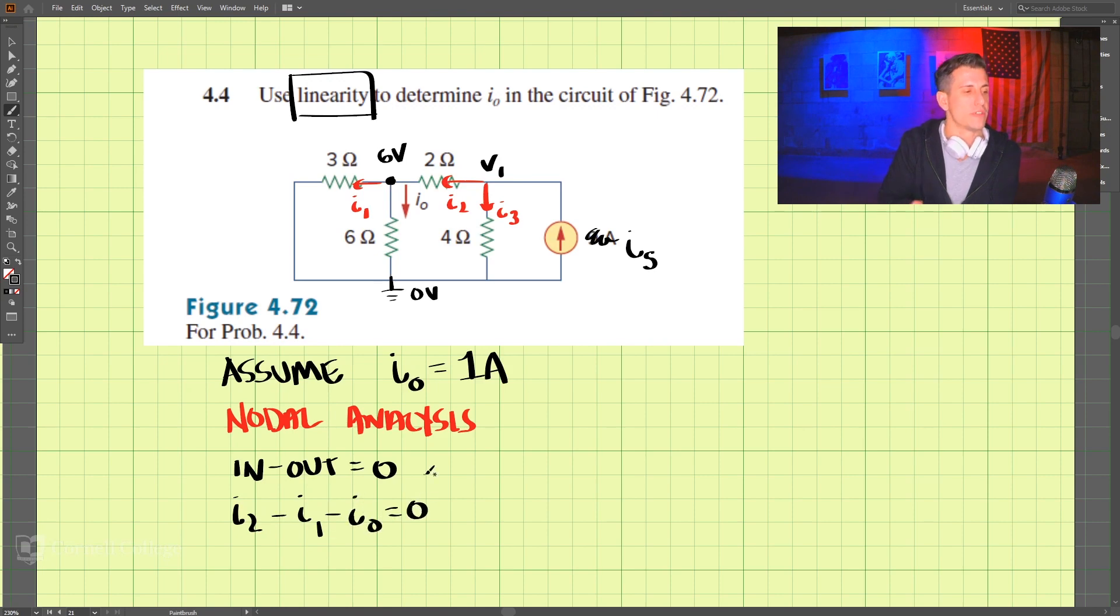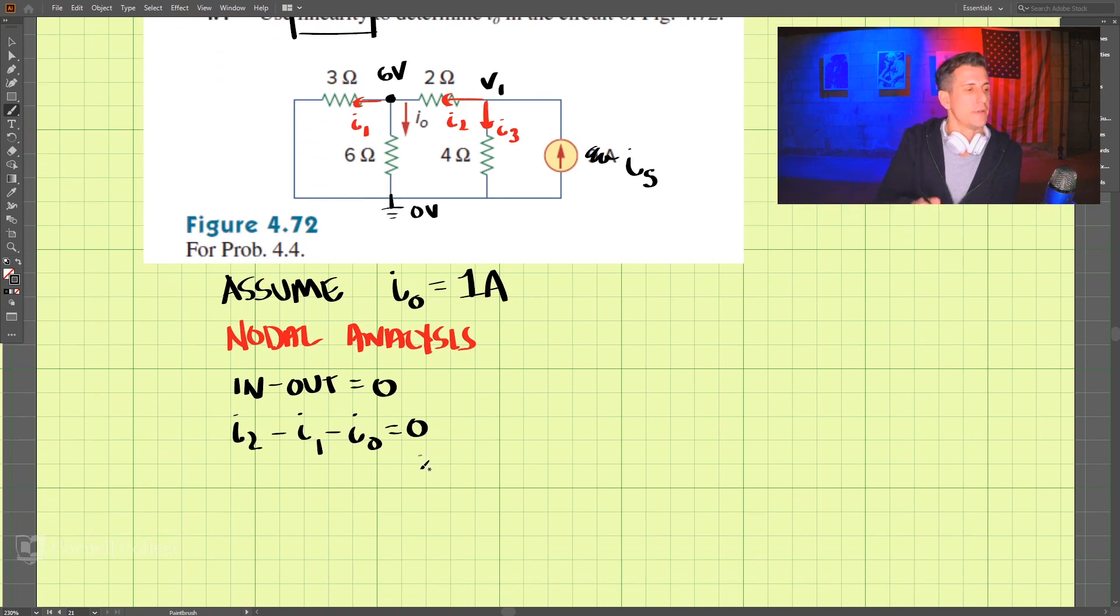We know that i2 here is v1 minus 6 divided by 2, that's the resistance in between these two. i1 is equal to 6 volts divided by this resistance, 3. And i naught we already said is 1 amp, and we set that equal to zero.